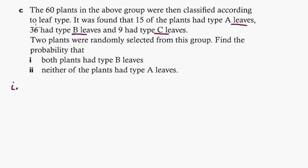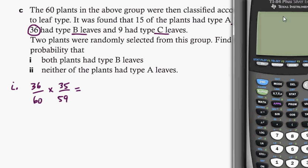Well, the first B leaf, the probability of getting that is just 36 out of 60. Now, anytime you do two things, independent probability, you're going to multiply. And then the next one, you've already taken one of them out. So there's 35 B leaves left, and there's only 59 leaves left. So if you see that right there, just break that out on your calculator, and you're good to go.